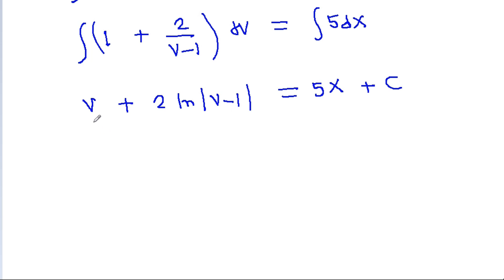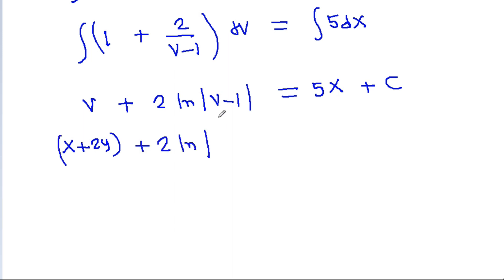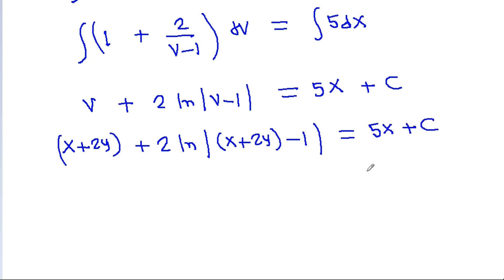Substituting back v = x + 2y, the solution is (x + 2y) + 2 ln|x + 2y - 1| = 5x + c. So this is the solution of the differential equation. Thank you very much.